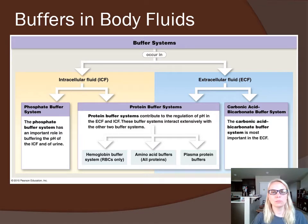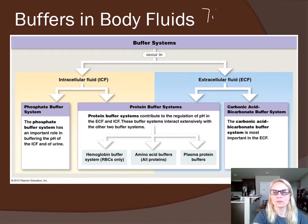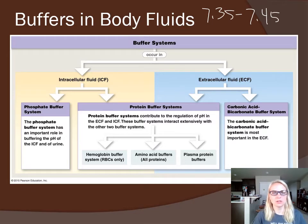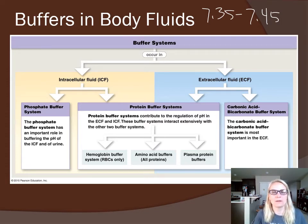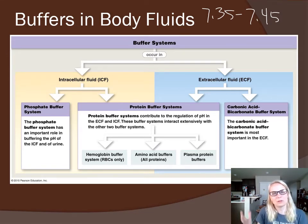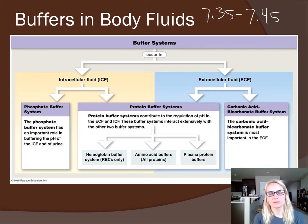Buffers are really important in helping us maintain our blood pH. We have a very narrow range of 7.35 to 7.45 — that's the pH of blood plasma, slightly on the alkaline side. Because we are acid-creating organisms, we need that slightly higher alkaline buffer in our blood to combat the acids produced by normal metabolic processes.